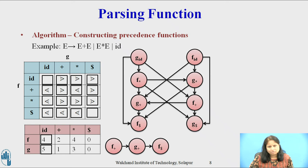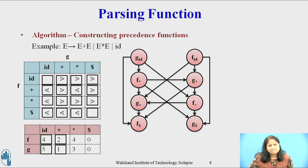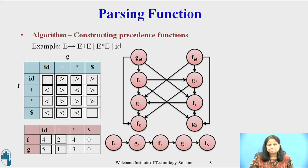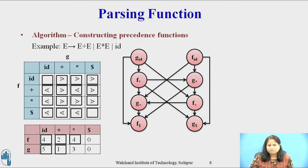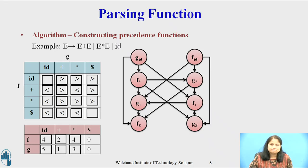The length of the longest path from f(plus) to f(dollar) is shown on this slide, so the entry for f on plus in the matrix is 2. The length of the longest path from g(plus) to f(dollar) is just g(plus) to f(dollar), so the entry for g on plus is 1. The length of the longest path from f(star) to f(dollar) is given in the figure, so the entry for f on star is 4. The path from g(star) to f(dollar) goes: g(star) to f(plus), f(plus) to g(plus), and g(plus) to f(dollar), giving the entry for g on star as 3.